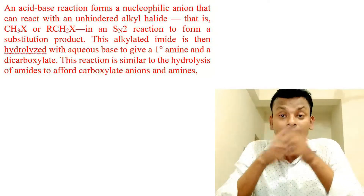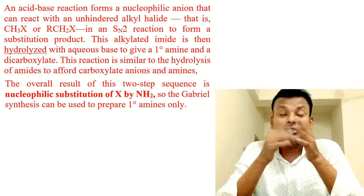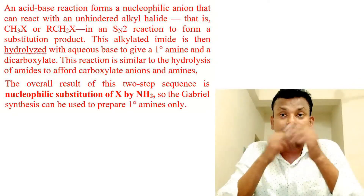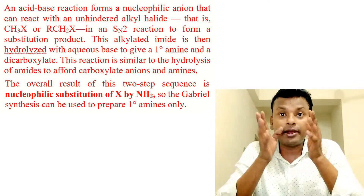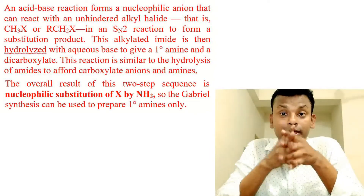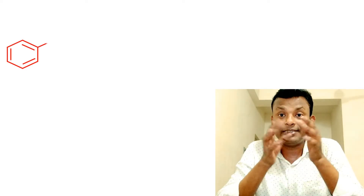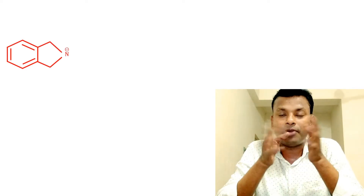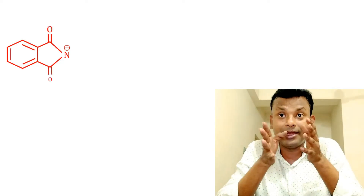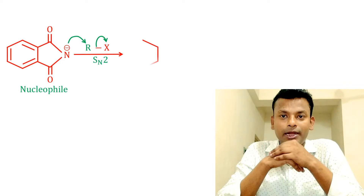The overall result of this two-step sequence is nucleophilic substitution of X by NH2. So Gabriel synthesis can be used to prepare one-degree amines only. This nucleophile reacts with the less hindered alkyl halide and performs an SN2 reaction to form alkylated amide, and hydrolysis gives a dicarboxylate product and a one-degree amine.